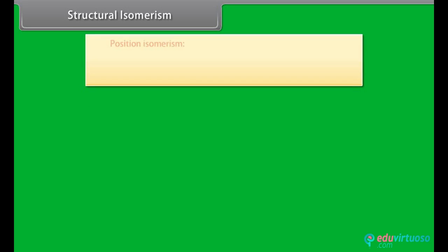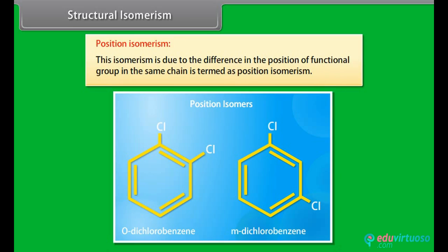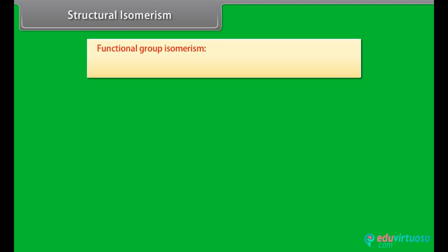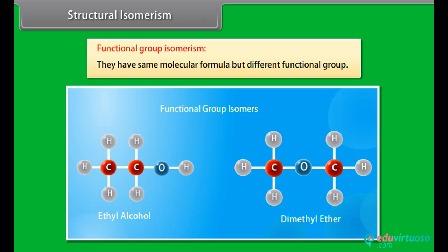Position isomerism is due to the difference in the position of a functional group in the same chain. Functional group isomers have the same molecular formula but different functional groups.